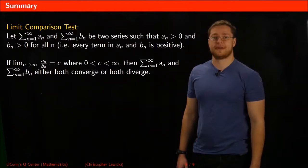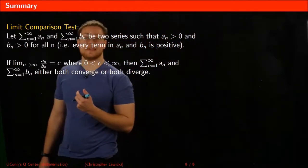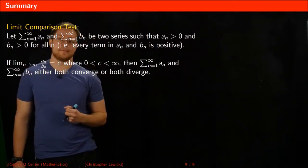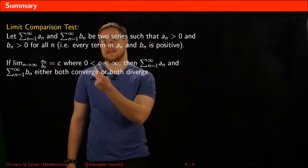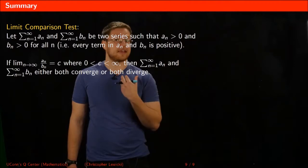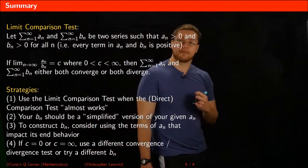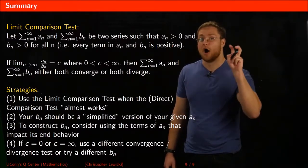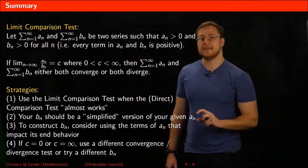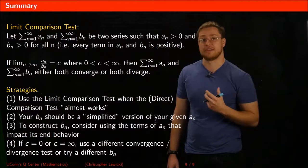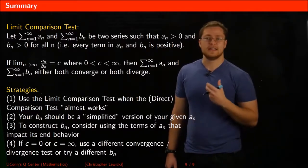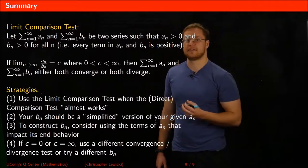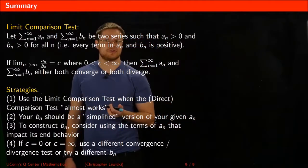To summarize: the limit comparison test says if you have two series aₙ and bₙ with all positive terms, and the limit as n goes to infinity of aₙ divided by bₙ equals some positive number c between 0 and infinity, then both series either converge or both diverge. Use the limit comparison test when the direct comparison test almost works. Construct bₙ as a simplified version of aₙ by focusing on which terms have the biggest impact on n behavior. If your c value turns out to be 0 or infinity, try a different test or a different bₙ.